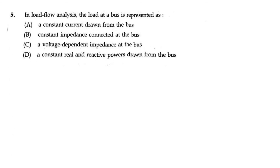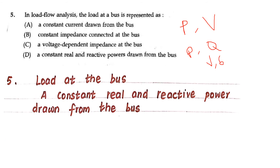In load flow analysis, the load at a bus is represented as constant real and reactive powers drawn from the bus. There are three types of buses: the generator bus, also known as PV bus; the load bus, known as PQ bus (constant real and reactive power bus); and the slack or swing bus, which is V-delta. So the answer is: the load at the bus is constant real and reactive power drawn from the bus.